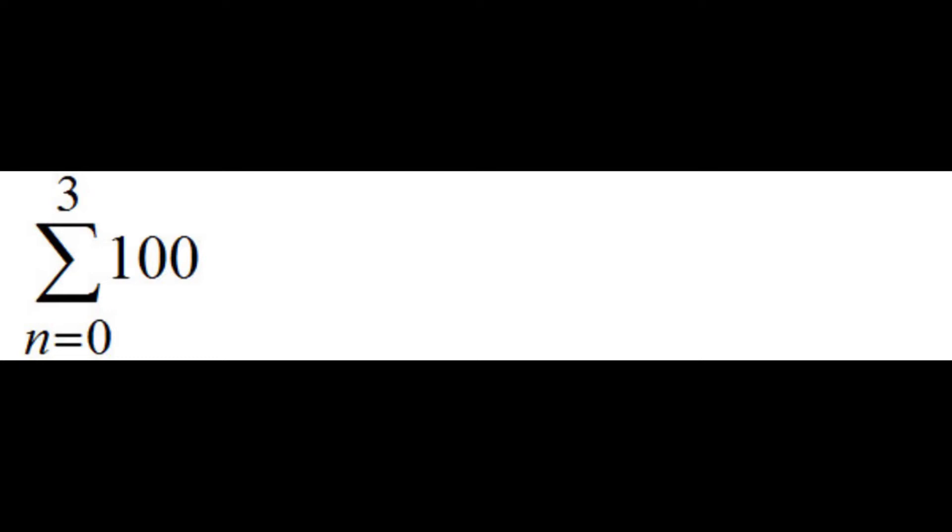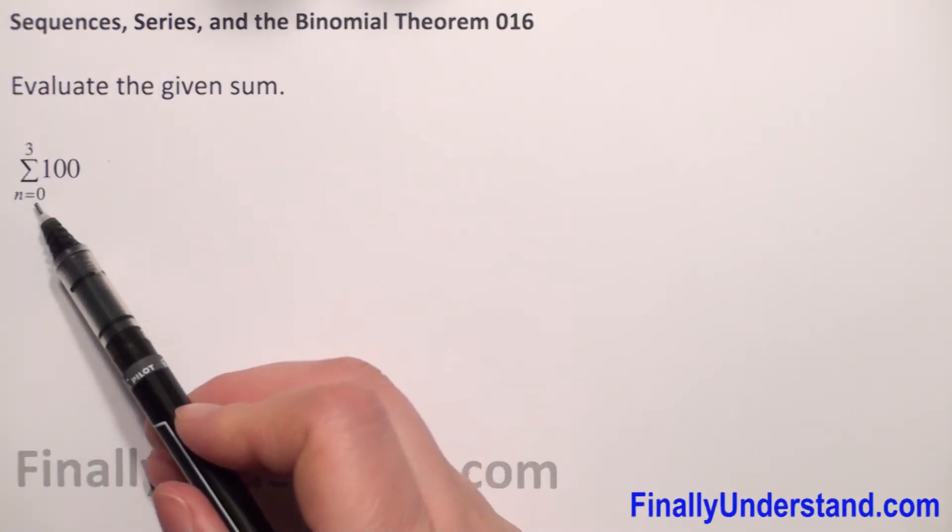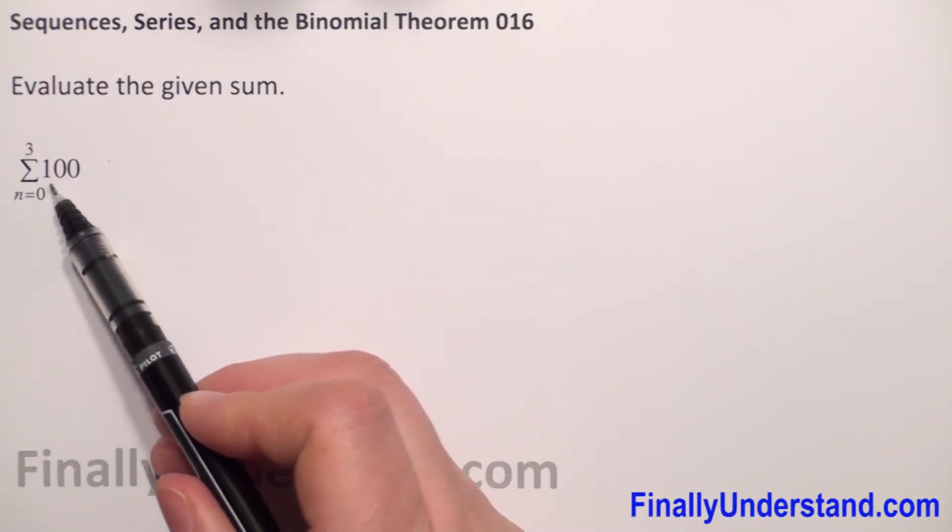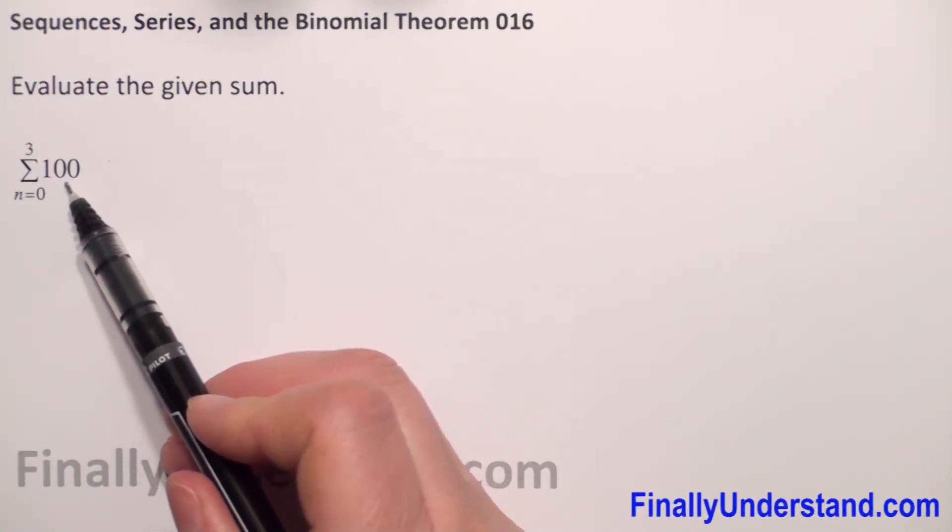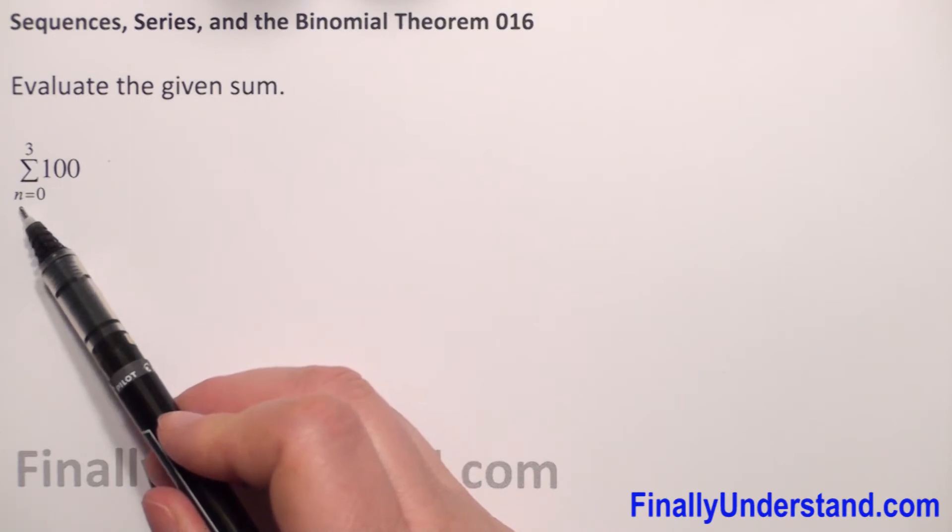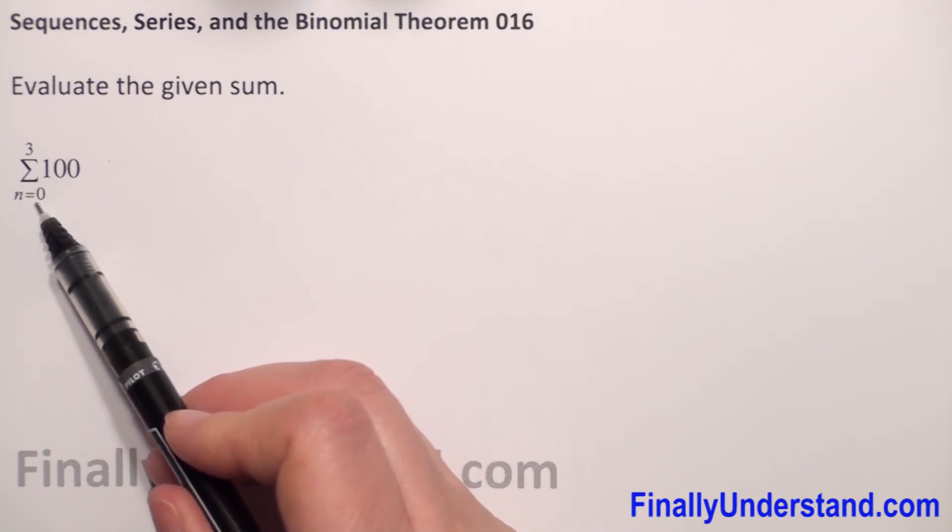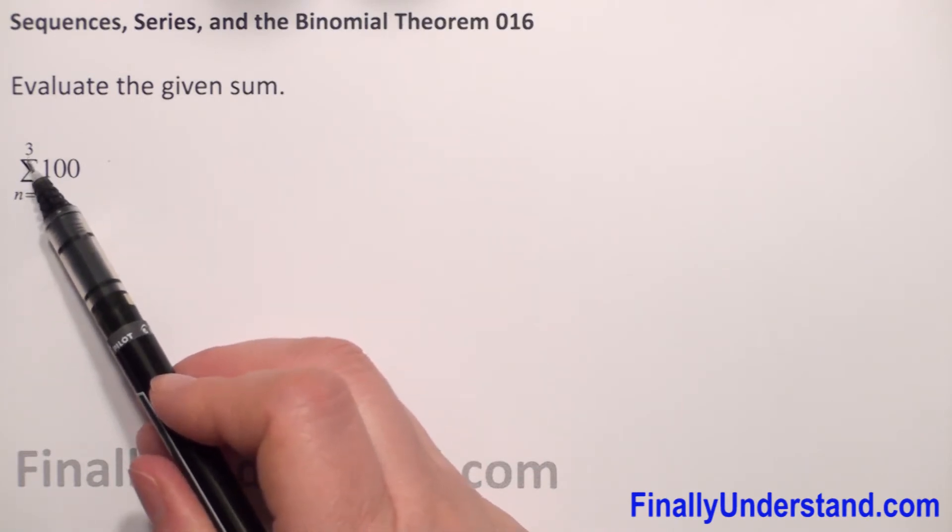We have to evaluate the given sum. We have here to find the sum of 100 from n equals 0 to n equals 3.